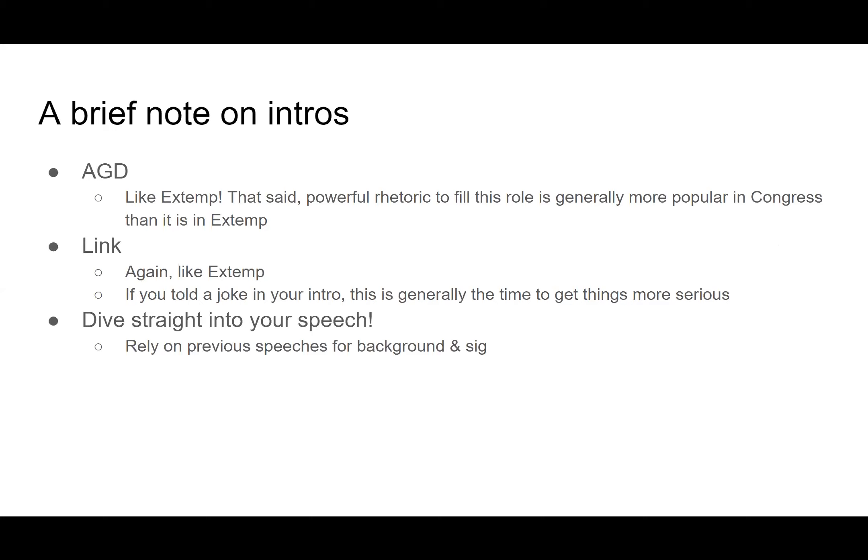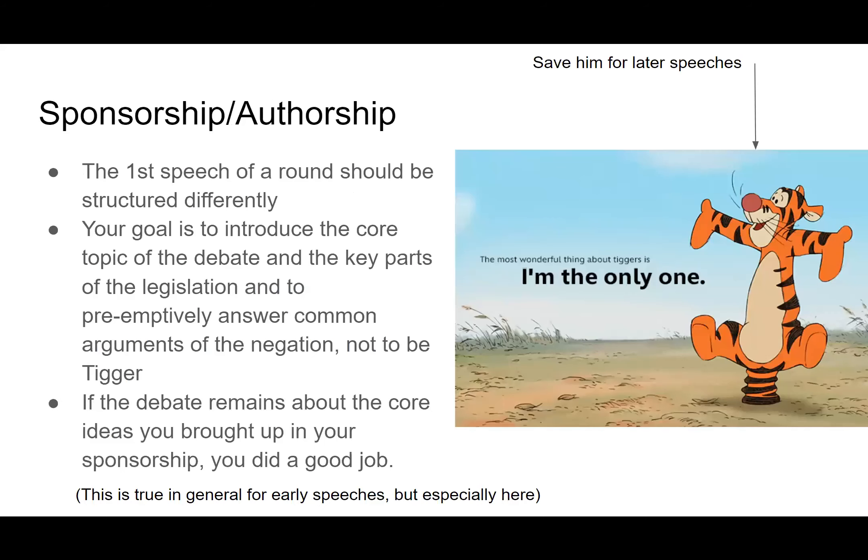But before we do any of that, we need to have a brief note on intros. Congress and Extemp share two similarities within their intros: the AGD and the link. Both of these are like what they are in Extemp, though powerful rhetoric is generally more popular in Congress, whereas Extemp is more of a fan of jokes and backgrounds as a way to start their AGD. Congress doesn't really have backgrounds or a significant statement or a question. After your AGD and your link, you just dive straight into your speech, because unlike an Extemp speech, you're relying on previous speeches to contextualize exactly what's going on in the round, so you don't want to waste any of your precious three minutes on doing that yourself.